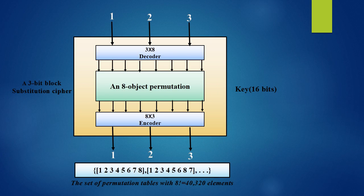The next slide shows a substitution cipher modeled as a permutation group. When we have a 3-bit input, it is first fed into a 3-to-8 decoder. We get a new 8-bit input with 7 zeros and a single 1. This single 1 is permuted to create the ciphertext. This new 8-bit ciphertext is fed into an 8-to-3 encoder to generate a 3-bit number again. Thus a substitution cipher can be modeled as a permutation group, with a set of permutation tables containing 8-factorial objects — a very large number.